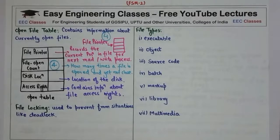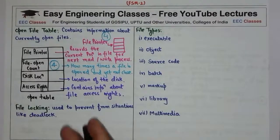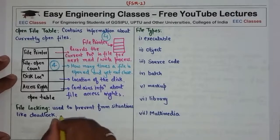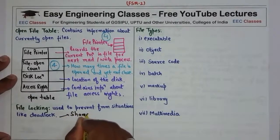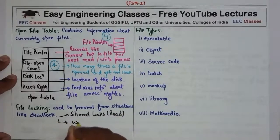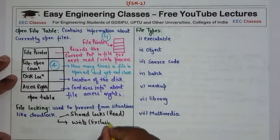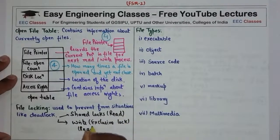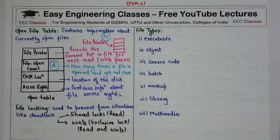Different systems also support file locking. File locking is used to prevent situations like deadlock. There are different kinds of locks. Shared locks are for read purposes only. Exclusive or write locks are for both read and write. Generally we use these two locks: shared locks and exclusive locks. This is about the open file table and file locking.